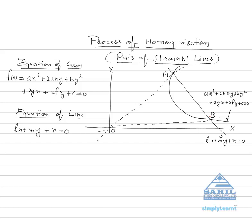Our topic is pair of straight lines, and in that particular topic we are discussing a process called homogenization. One curve is given f(x), with equation ax² + 2hxy + by² + 2gx + 2fy + c = 0, and a straight line lx + my + n = 0 is cutting this curve at two different points A and B. These two points are joined to the origin, and we have to find the combined equation of lines OA and OB.